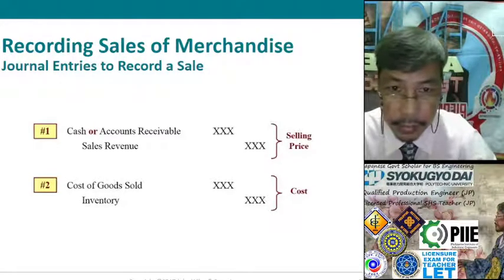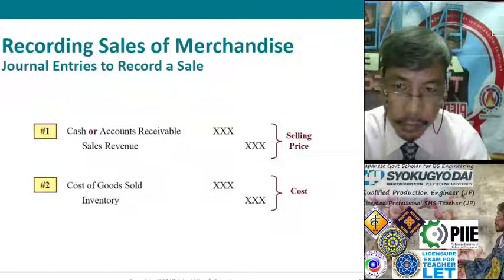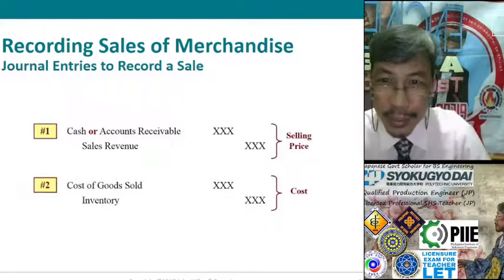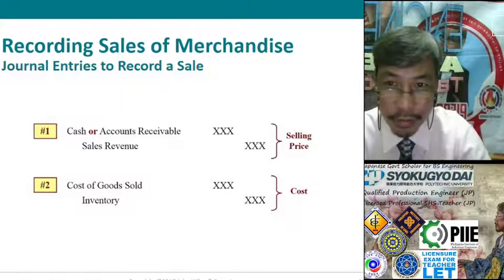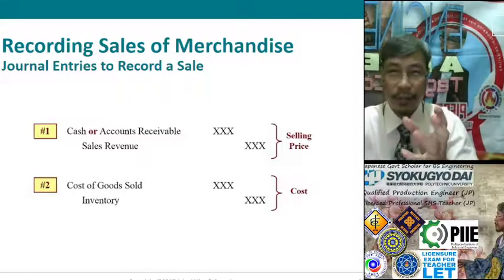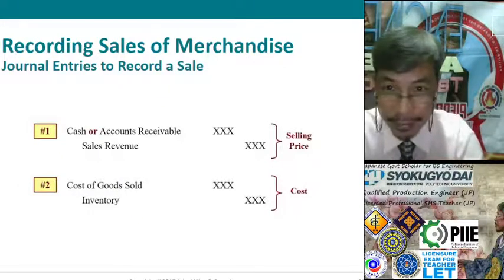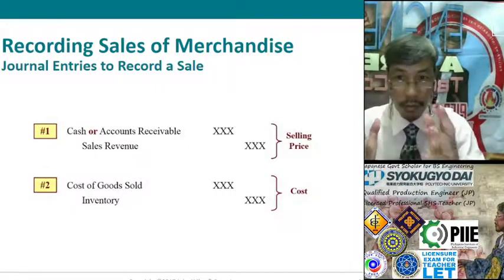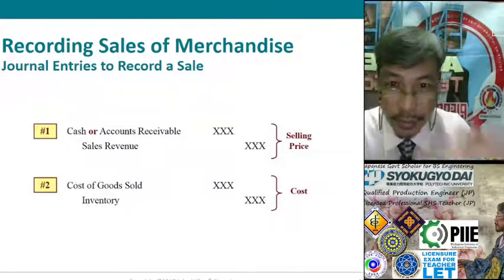Cost of Goods Sold is not exactly an asset — it is similar to expenses. Expenses have a behavior much like an asset. So if expenses increase, we have to debit, just like an asset. If the asset increases, we debit. That is how it works in our debit-credit rules. Recall our rules of how to debit and credit — that is the debit-credit analysis.